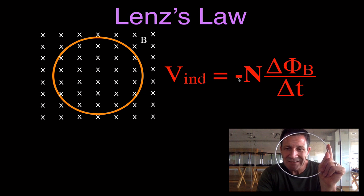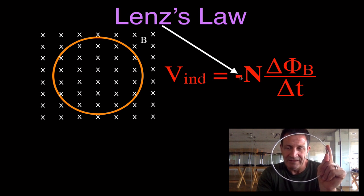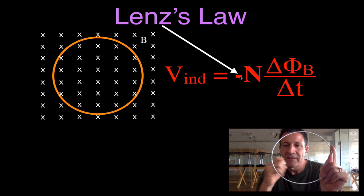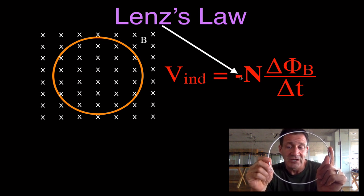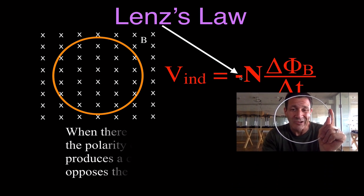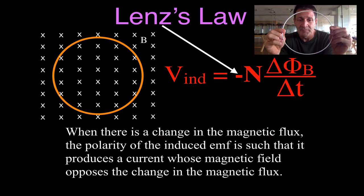Well, what is this negative sign? This negative sign is really Lenz's Law — right there. That's what we add on for Lenz's Law. It's just there to remind us of something. We don't really have to put the negative sign there; the negative sign is just there to remind us. And this is what Lenz's Law is, and this is what the negative sign is there to remind us of.